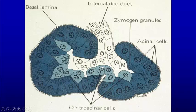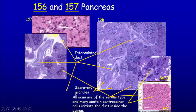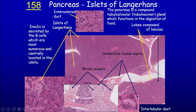The zymogen granules are the secretions of the acinar cells. Here we see the pancreas with the intercalated duct and the acini. We can see different components of the exocrine function of the pancreas. There is also endocrine function — the islets of Langerhans — distributed throughout because there's a local portal system between the islets and the acinar cells. You need the islets distributed throughout the pancreas because insulin stimulates secretion of the acinar cells and glucagon inhibits, so you have that local stimulation and control.